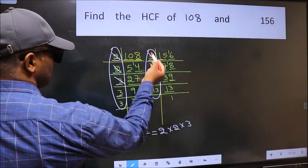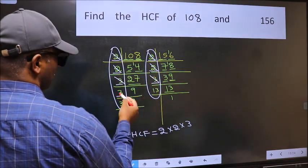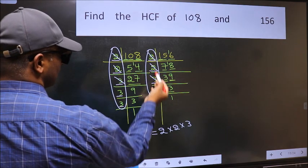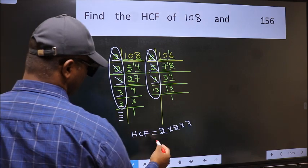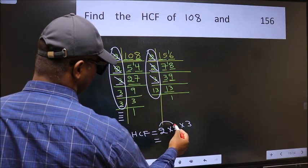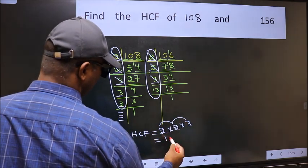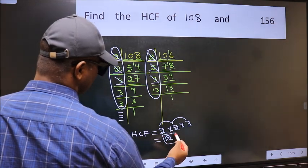Next number 3. Do we have 3 here? No. Next number 3. Do we have 3 here? No. No more numbers have been left out. So our HCF is 2 into 2, 4 into 3, 12 is our HCF.